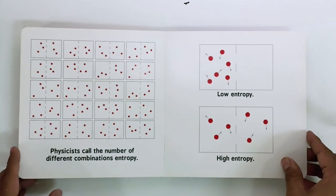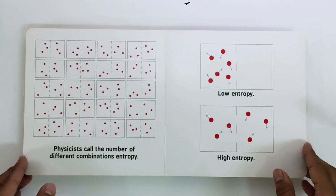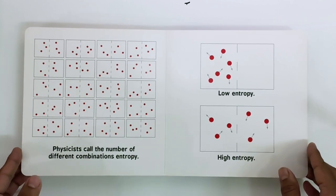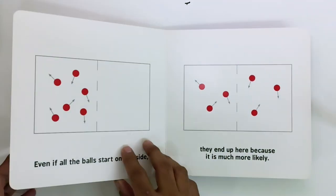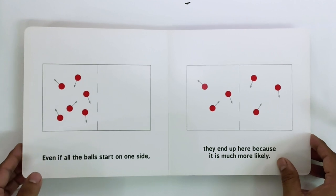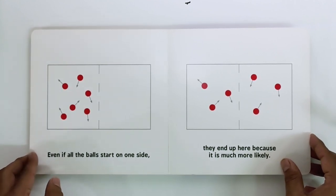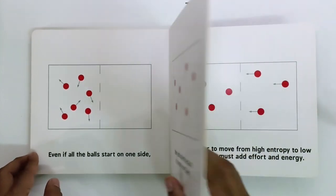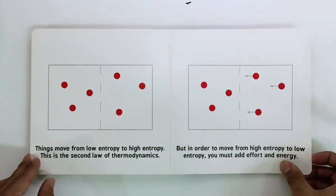Physicists call the number of different combinations entropy. Low entropy. High entropy. Even if all the balls start on one side, they end up here because it is much more likely. Things move from low entropy to high entropy.